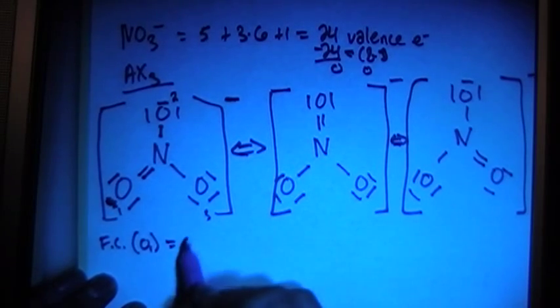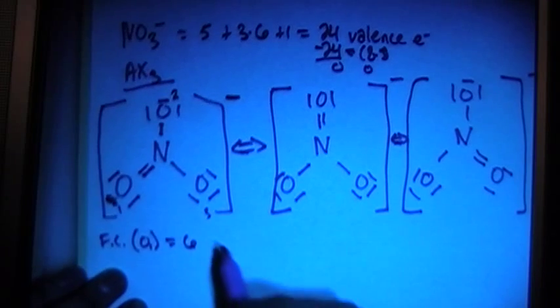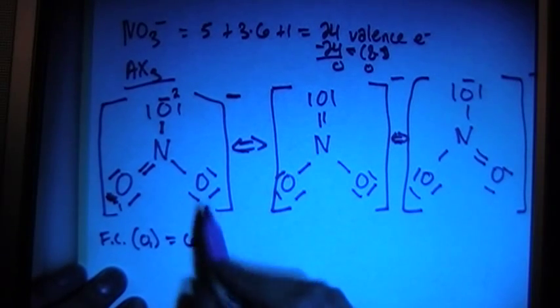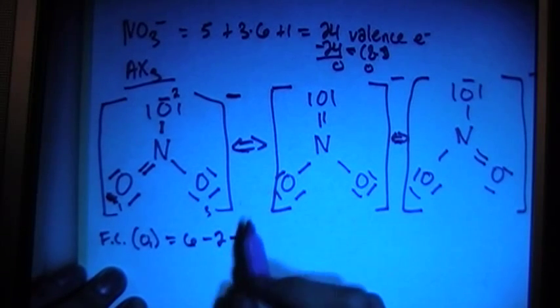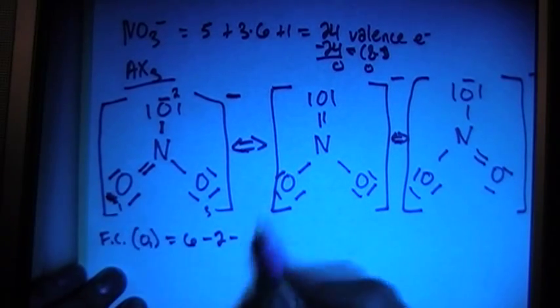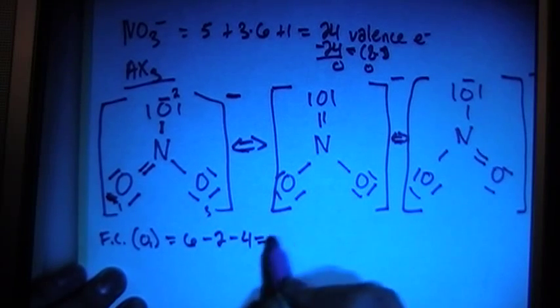Remember, valence brought in is 6, minus the number of bonds, which is 2, minus the number of non-bonding electrons is 4. So that's going to give us zero.